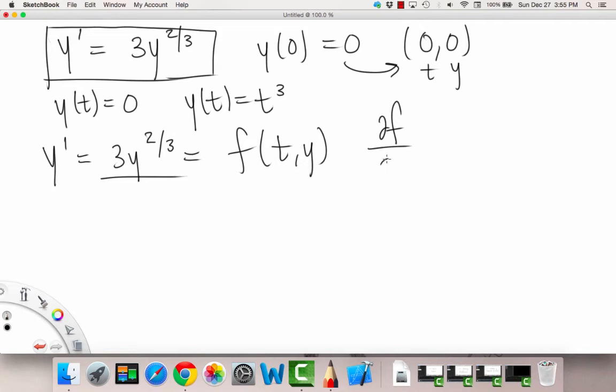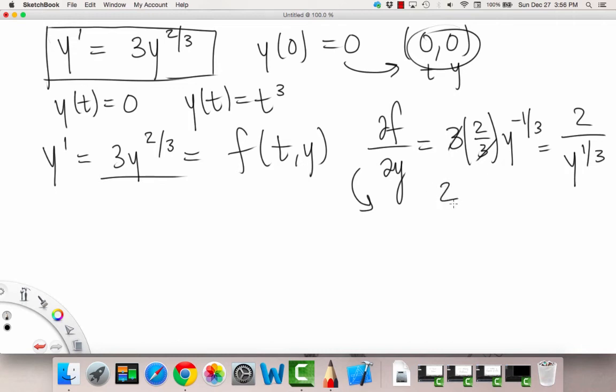Except when we take the partial derivative with respect to y, we get 3 times 2/3 times y^(-1/3), which turns out to be 2/y^(1/3). And we can note that at the point (0,0), where y=0, then we get 2/0^(1/3), which is undefined, right?